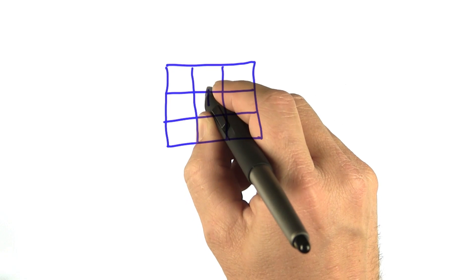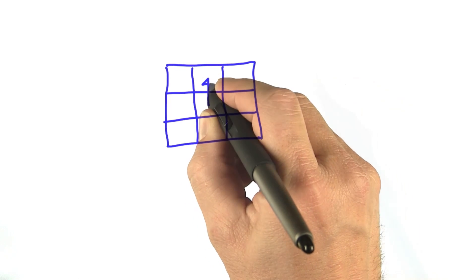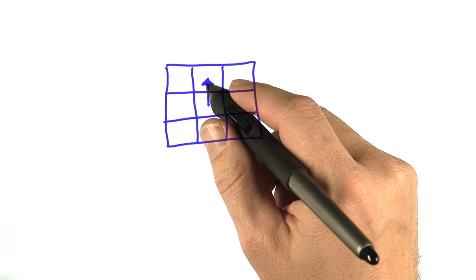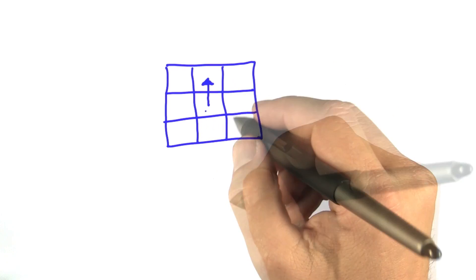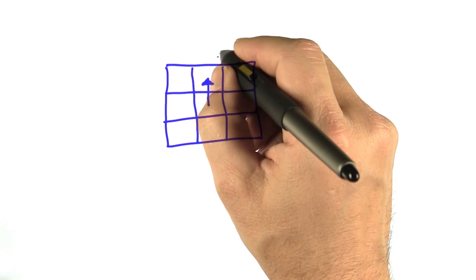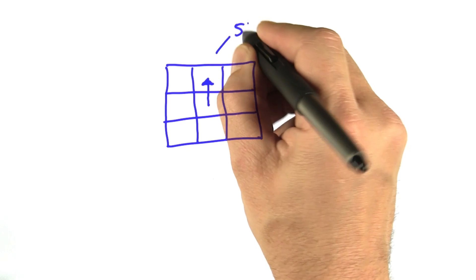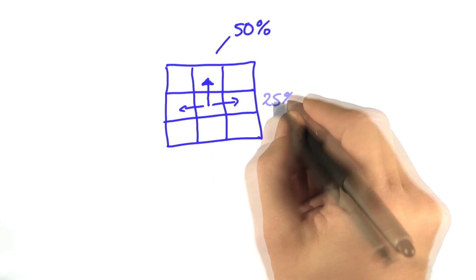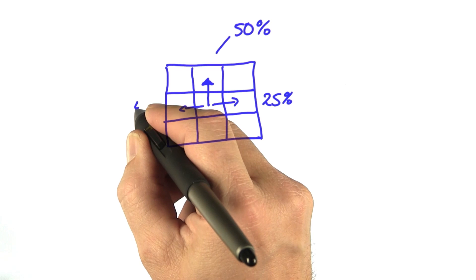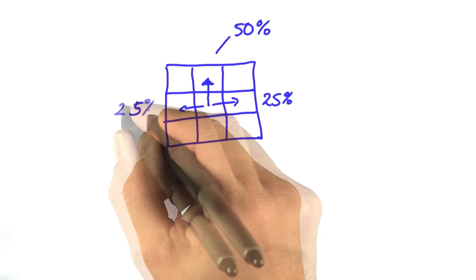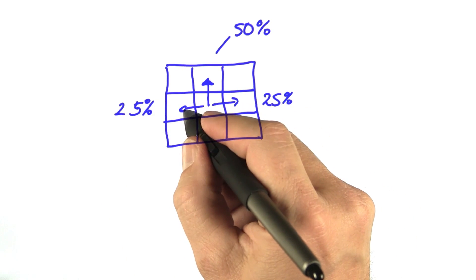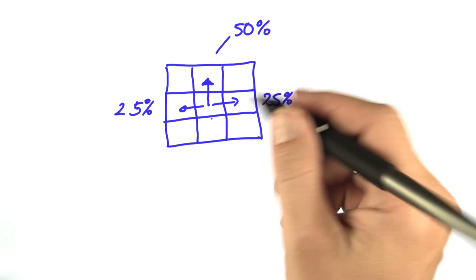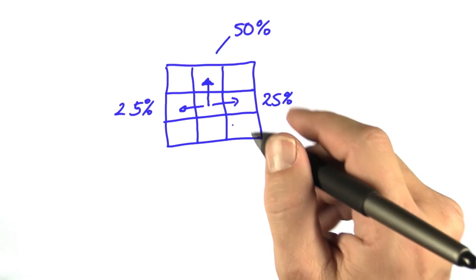Take the action of going north from a cell. In a deterministic action, it always succeeds unless we run into a wall. In the stochastic case, it succeeds with a certain probability, say 50%, whereas with a 25% chance it might accidentally go left or right, even though we commanded it to go up. This is a stochastic action.